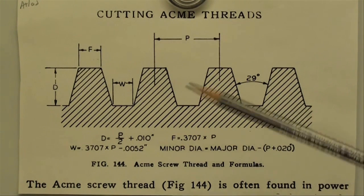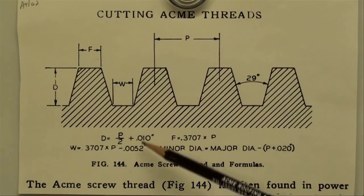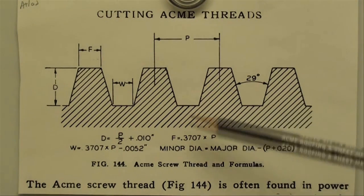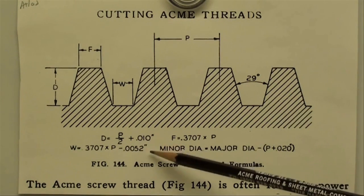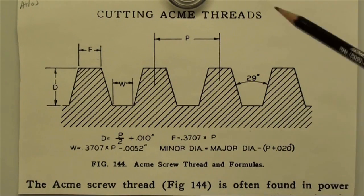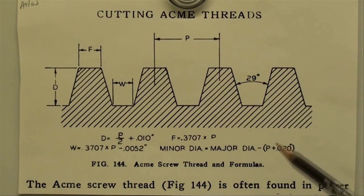Looking here, we've got one formula that we're interested in, and that is the depth of the thread. The depth equals the pitch divided by two plus ten thousandths. I'm going to cover that a little bit more at the end of the video. If you're not interested in it, you can omit that part.